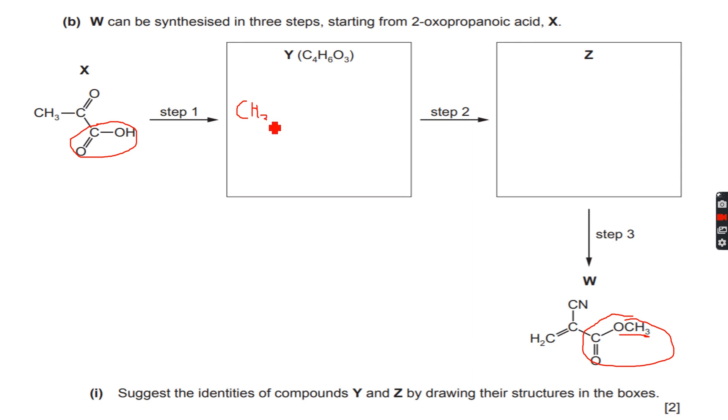Now let's make the ester group. We have reacted this with methanol and the ketone group will remain the same—there is nothing happening to the ketone. However, the carboxylic acid is now reacting with an alcohol to form an ester. So now we have this. If we count all the atoms, we have one, two, three, and four carbon atoms, so this is correct.